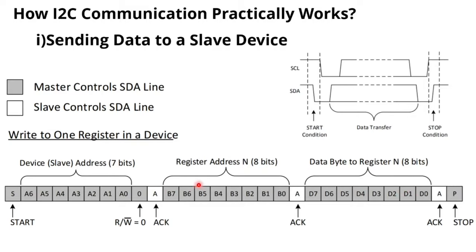For the stop sequence, the clock goes from low to high, and when the clock is high the data line also transitions from low to high. To transfer one character of data, the steps are: startup sequence → 7-bit address with write bit (slave acknowledges) → 8-bit register address (slave acknowledges) → 8-bit data D0–D7 (slave acknowledges) → stop.